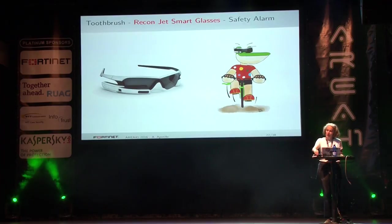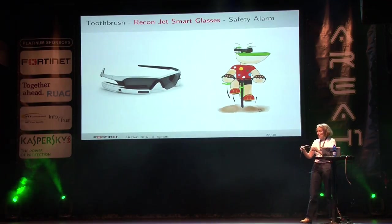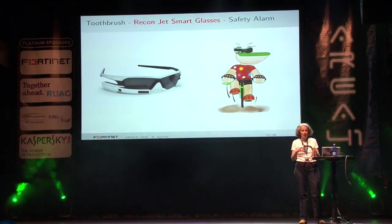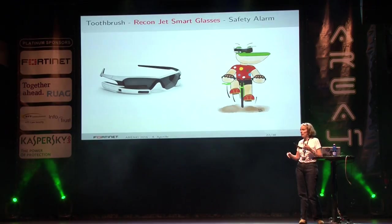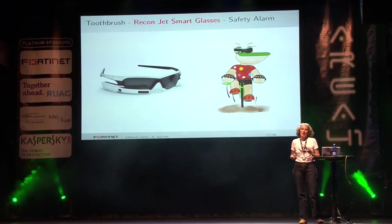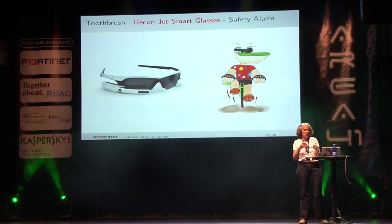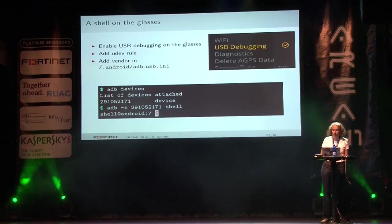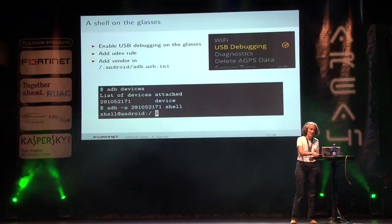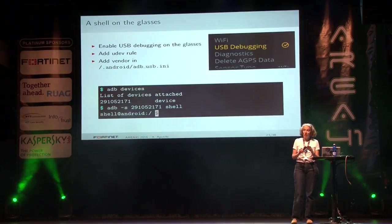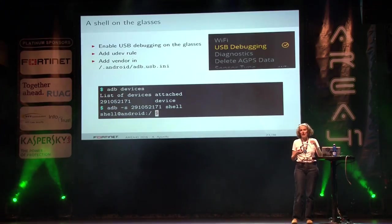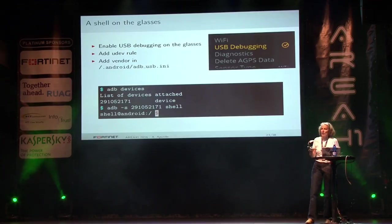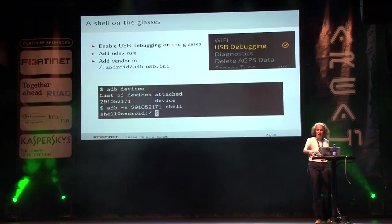Now let's talk about those cycling and running smart glasses — feel free to come see them more closely after the talk. They're designed for cycling and running: they tell you your pace, show a small map if you're heading in the right direction, and show if friends are running nearby. The cool thing for a reverse engineer is that they run Android — it's just like hacking into a smartphone. I can enable USB debugging and get a shell on the smart glasses. Getting a shell on smart glasses is fun.